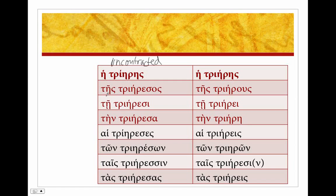Looking at the uncontracted forms: nominative trieres, with stem triere- and ending -s. Genitive trieresos, stem and ending -os. Dative trieresi, stem and ending. Accusative trieresa, stem and ending. So the endings are going to stay the same in the uncontracted forms.